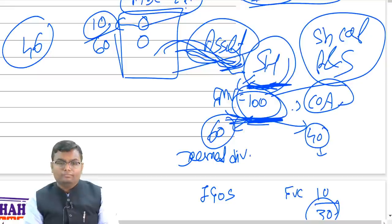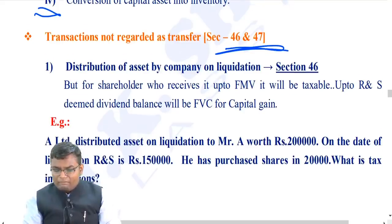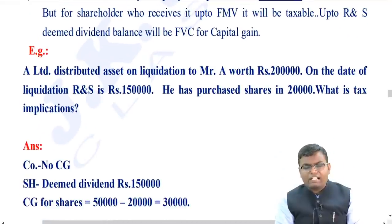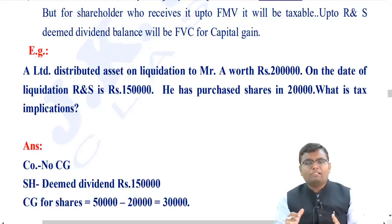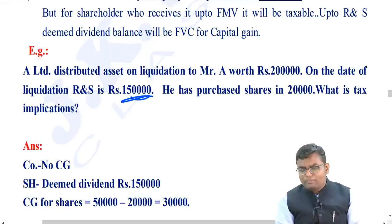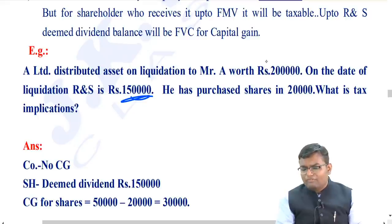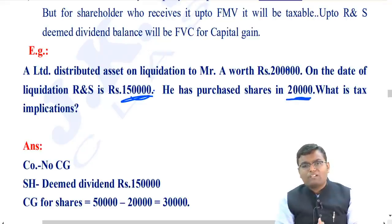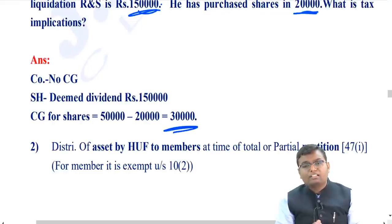In the liquidation example: for the company, no capital gain. For the shareholder, FMV of Rs. 2 lakh minus reserve and surplus Rs. 1.5 lakh = deemed dividend Rs. 1.5 lakh. Balance Rs. 50,000 is the sale value for capital gain. Deduct cost of acquisition Rs. 20,000; capital gain = Rs. 30,000.